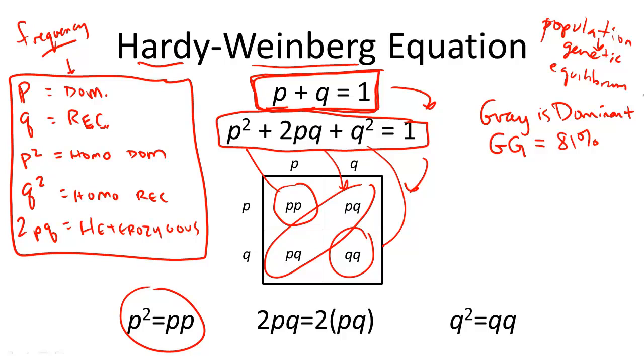The question here would be, what percentage of the population is gray? I said gray is dominant, and these are all the homozygous dominant individuals. But what about the heterozygous individuals? How do we total that up? So let's use the equation to get us started.